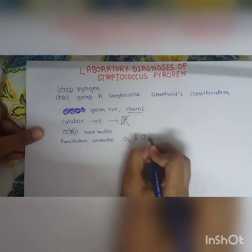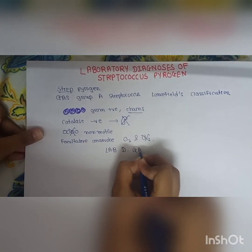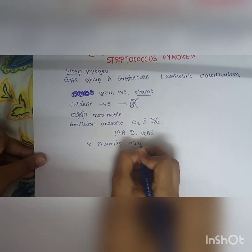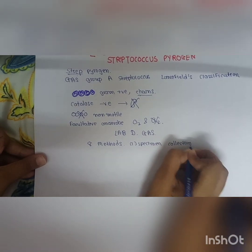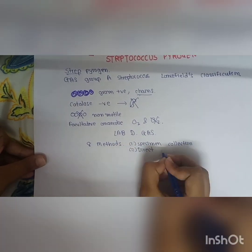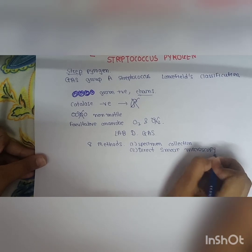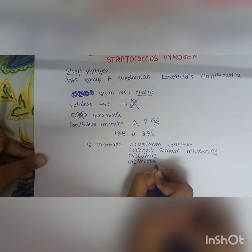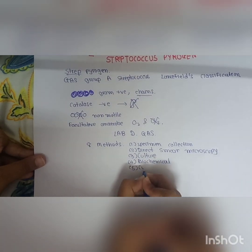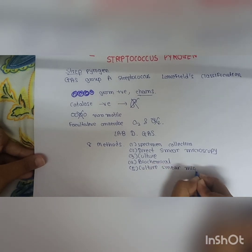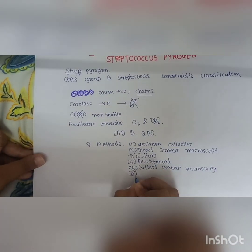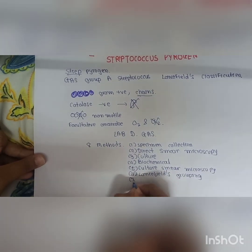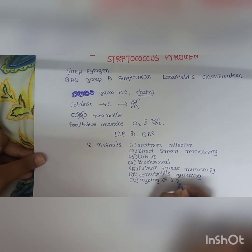The laboratory diagnosis of GAS is divided into eight methods: first, specimen collection; second, direct smear microscopy; third, culture; fourth, biochemical test for identification; fifth, culture smear microscopy; sixth, Lancefield grouping; seventh, typing; and eighth, antimicrobial susceptibility test.